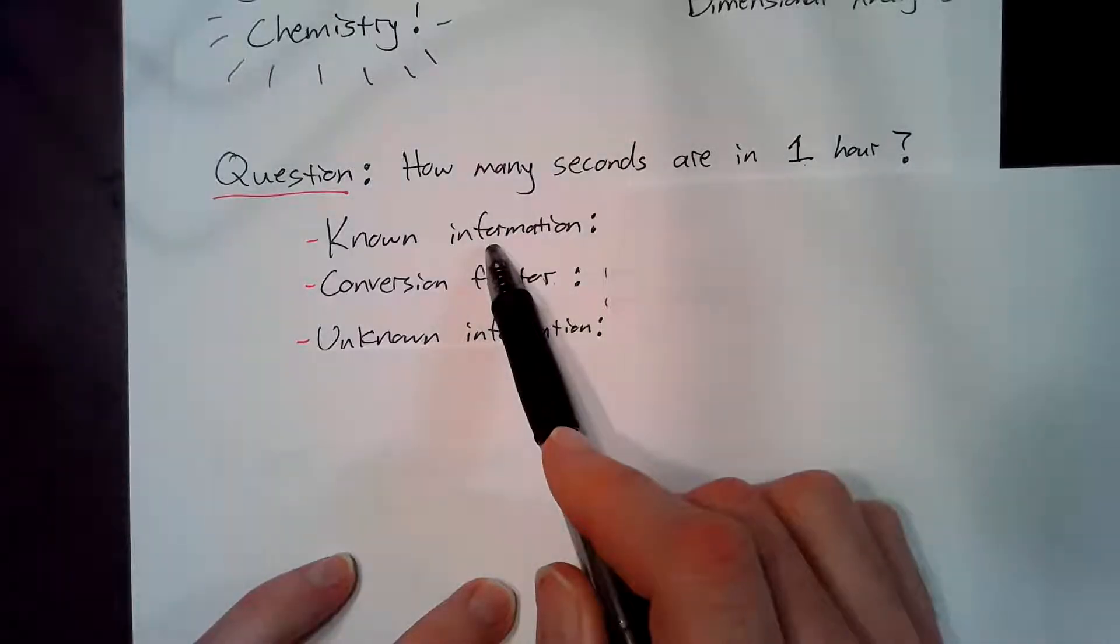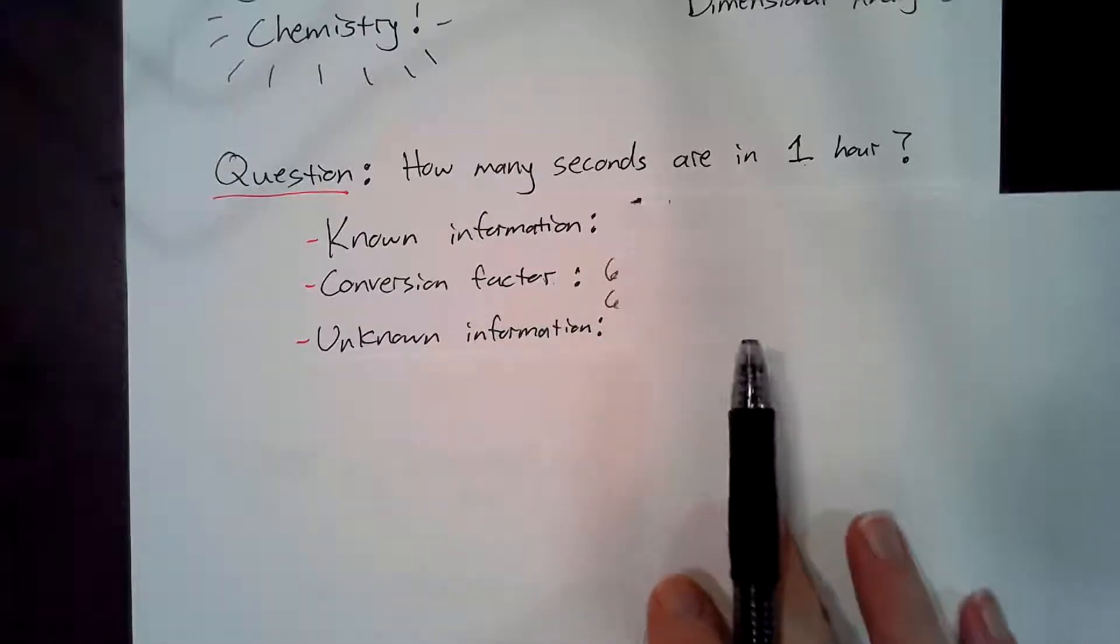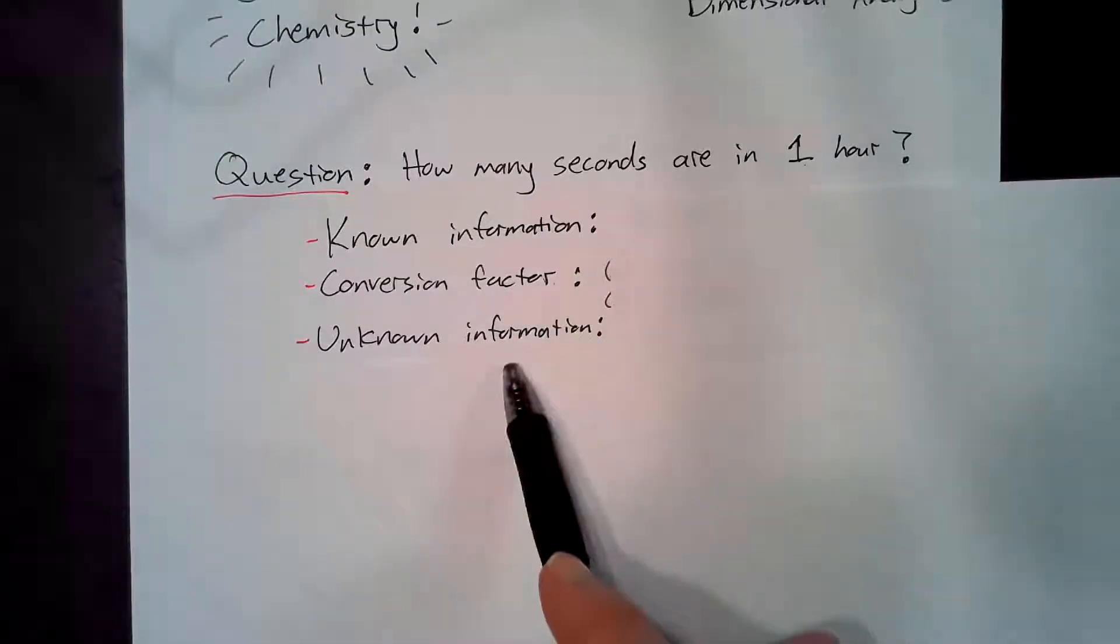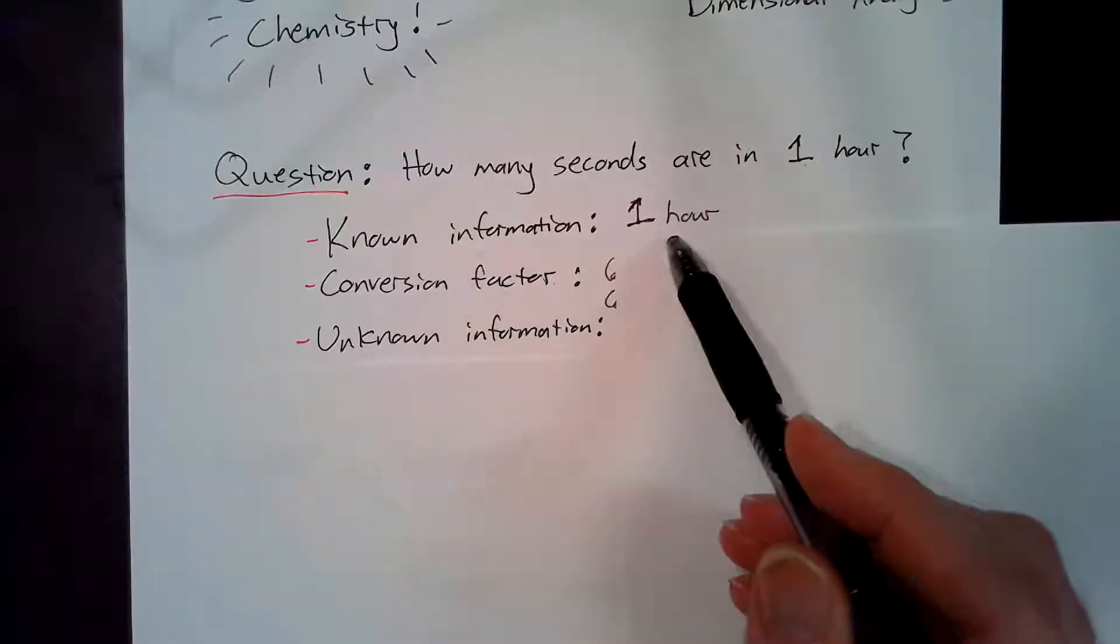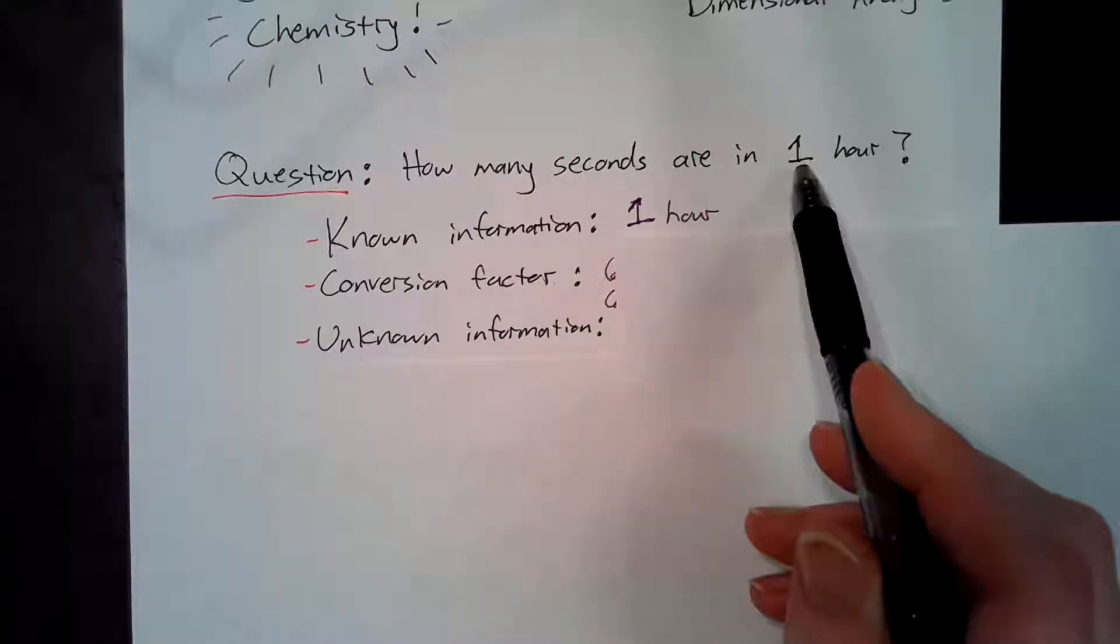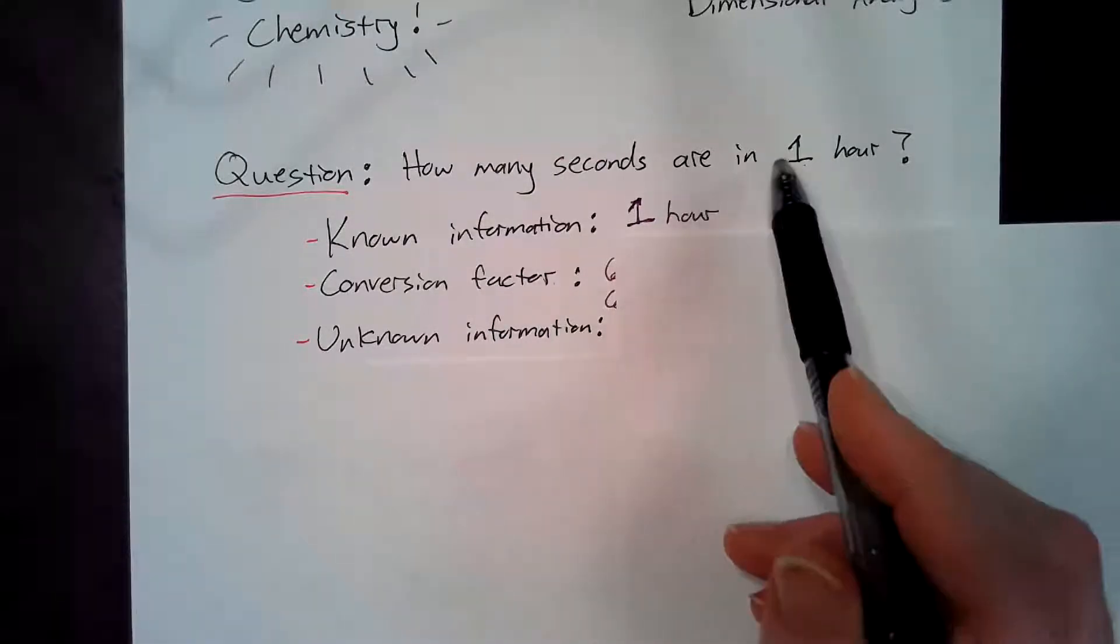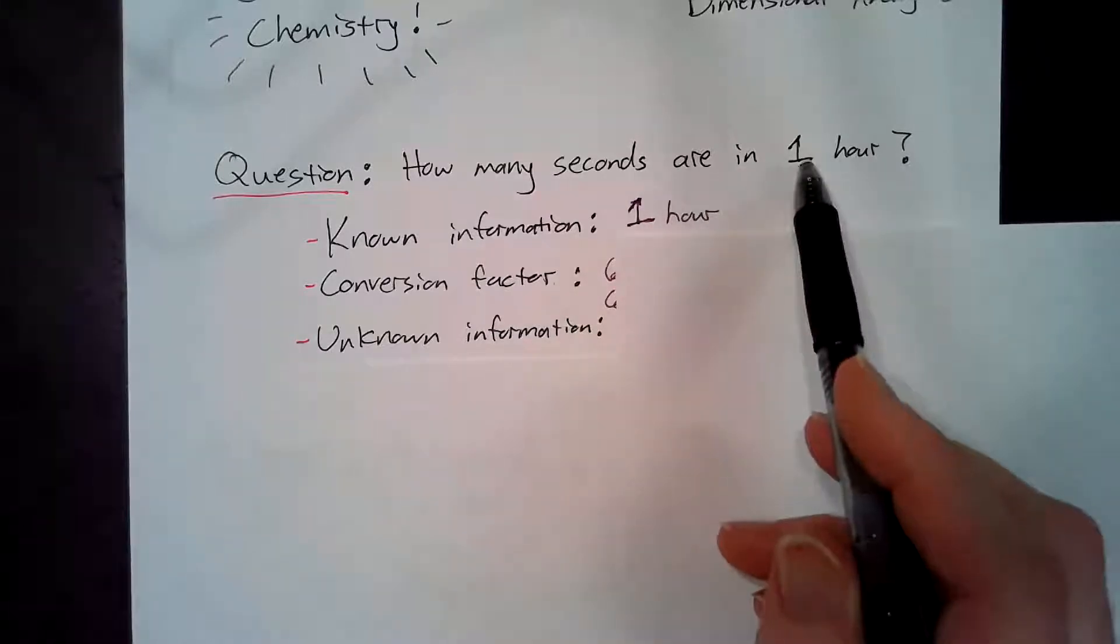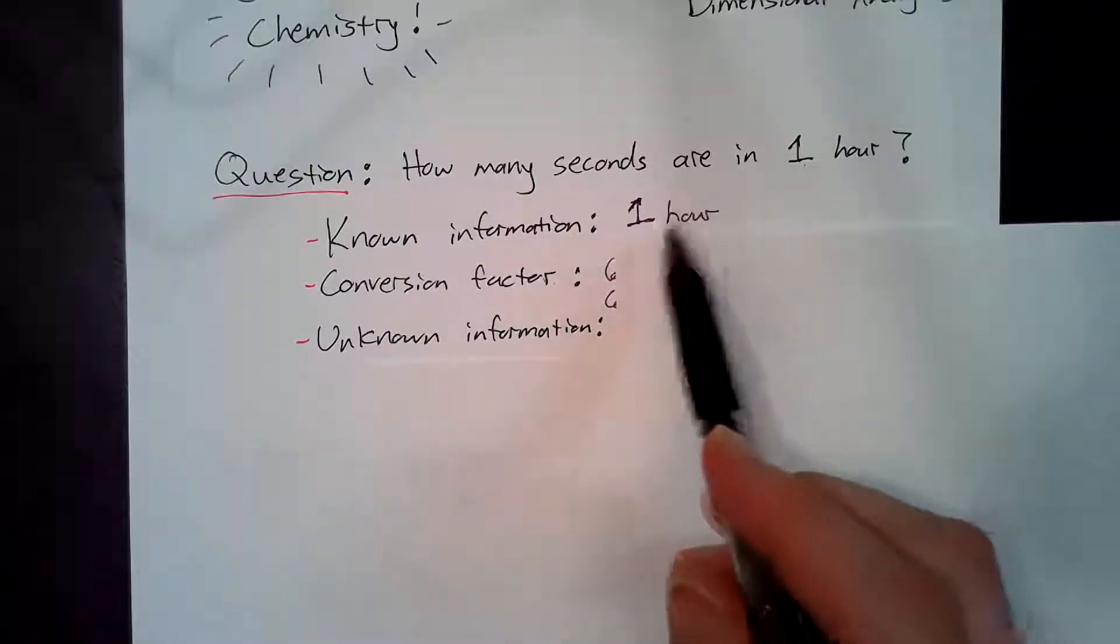We want to find the known information, what conversion factor we're going to use, and we're going to identify the unknown information. The known information is going to be one hour. That's usually the number. So there's one hour. That's usually the known information.